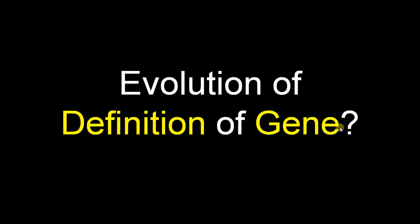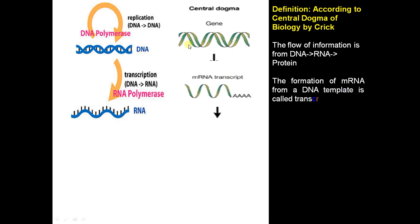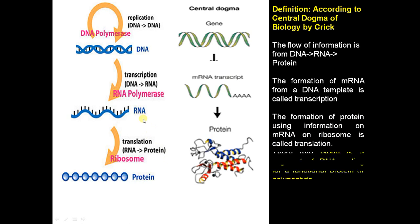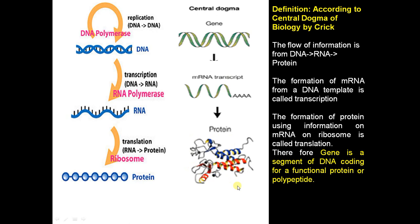How did we reach this definition? According to the central dogma of biology, DNA is transcribed to mRNA. The process of forming RNA from DNA is called transcription, and that information is used to convert RNA to protein by the protein-synthesizing machinery, the ribosome. So the information on DNA is transferred to RNA and later translated to protein, giving us the first definition: gene is a segment of DNA that codes for a functional protein or polypeptide.